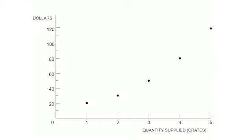Given these marginal costs, how many pumpkins will the farmer produce depending on the price? If the price is between zero and $20, the farmer won't produce any pumpkins. If the price is $10, the marginal cost of producing one pumpkin is $20 — cost is greater than price, so it makes no sense to produce. But when the price reaches $20, the farmer realizes the marginal cost equals the price and will produce that pumpkin. The price must reach $30 before the farmer produces two pumpkins, since that's the marginal cost of the second one.